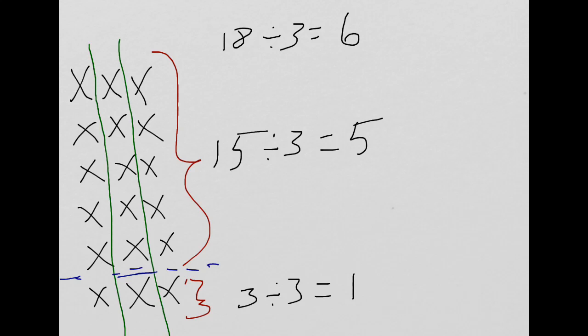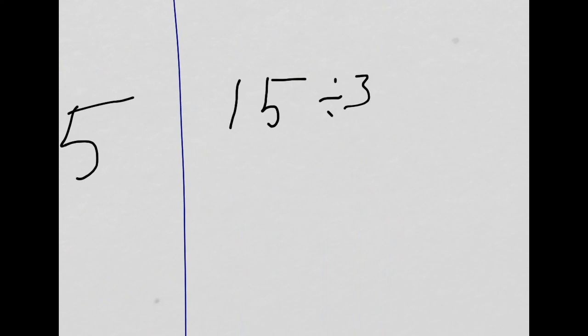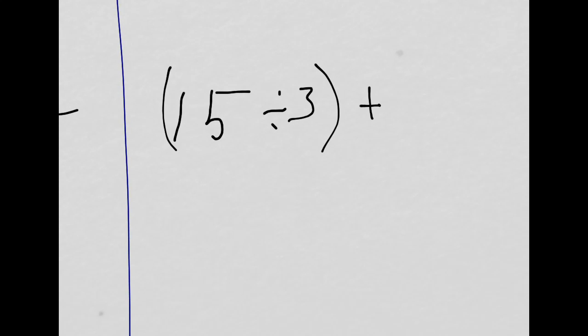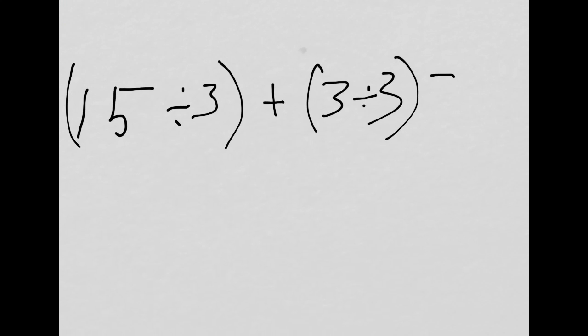Again, the mathematical writing part is, I think, part of what got people a little bit confused with this. But, let's just show what we did here. We had 15 divided by 3. So, we had 15 divided by 3, plus 3 divided by 3, equals 18 divided by 3. We said that 15 divided by 3 is 5, and that 3 divided by 3 is 1. So, we see that 18 divided by 3 is 6.